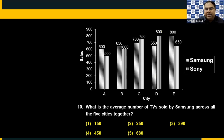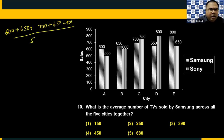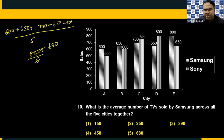Question ten: Average number of TVs sold by Samsung across all five cities. Samsung values: 600, 650, 700, 650, 800 — total 3400, divided by 5 equals 680. Choice five.